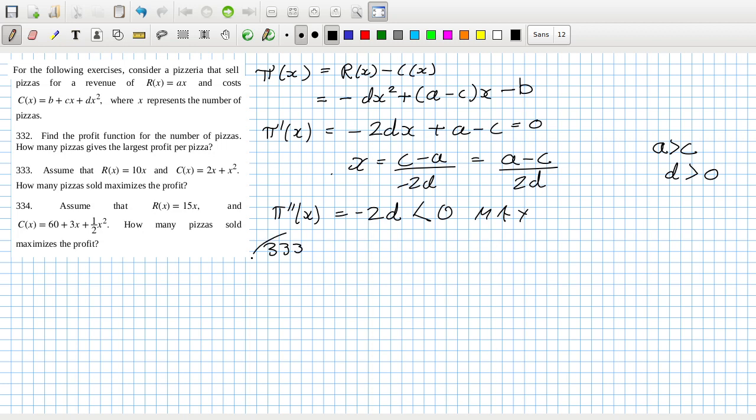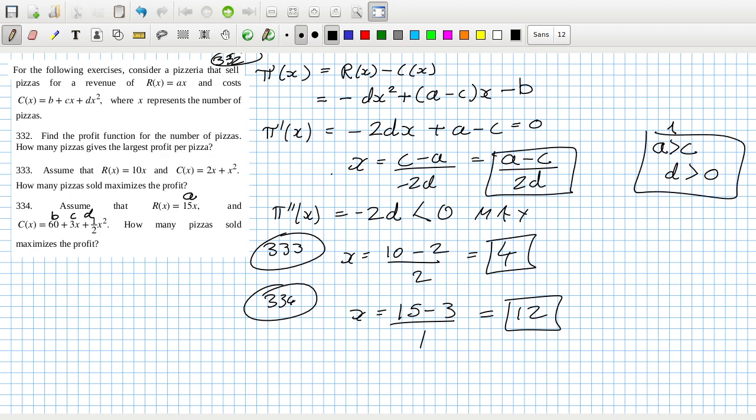Now assume that. How many pizzas to maximize the profit? That would be a, which is 10, minus c the coefficient of x which is 2, over 2d where d the coefficient of the square is 4. How many pizzas to maximize the profit? Again that's (12 - 4) over 2d.